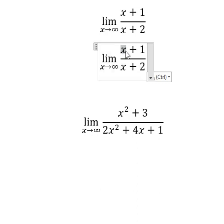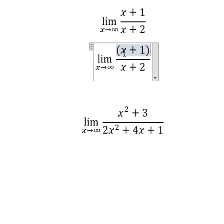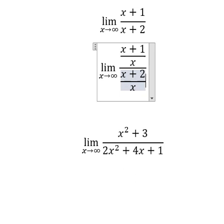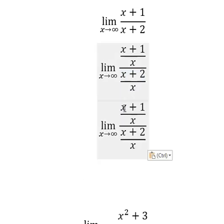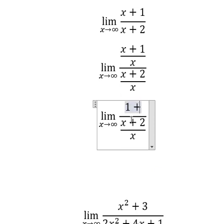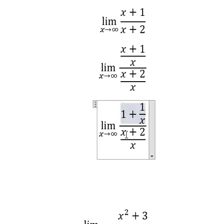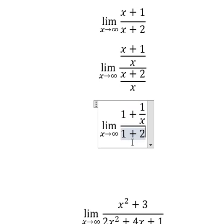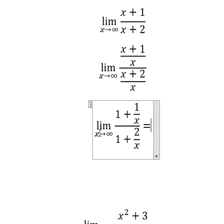The highest power is x, so we need to divide by x on numerator and denominator. X divided by x, we have number one. This one we have number one. So when x approaches positive infinity, number one divided by positive infinity, you got number zero. This one you got number zero.